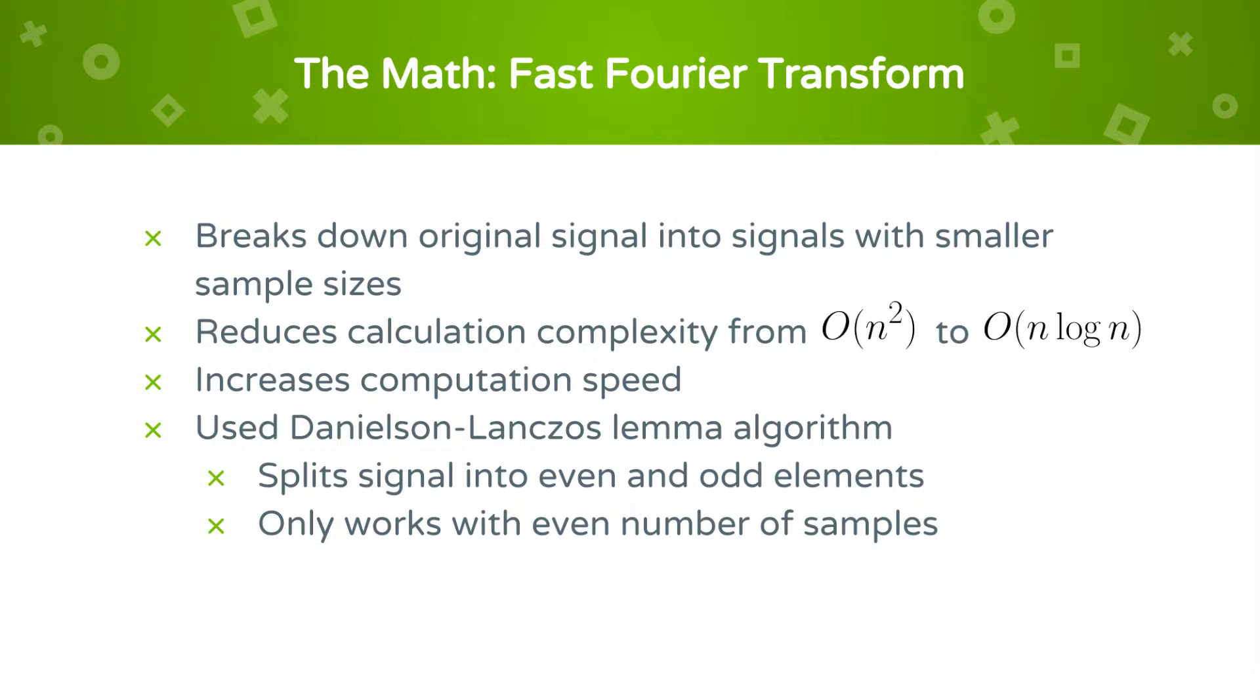The most common Fast Fourier Transform algorithm is the Cooley-Tukey algorithm, but we used the Danielson-Lanczos lemma, which splits the signal into even and odd samples before computing the discrete Fourier Transform of each component and stitching them together. This only works when there is an even number of samples, but we were able to work around this by inserting a conditional statement into our code.